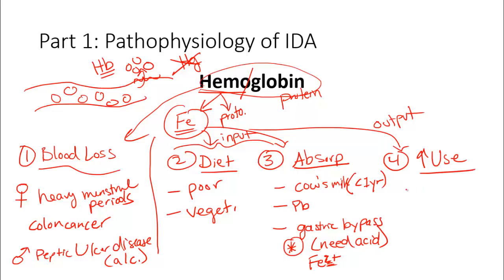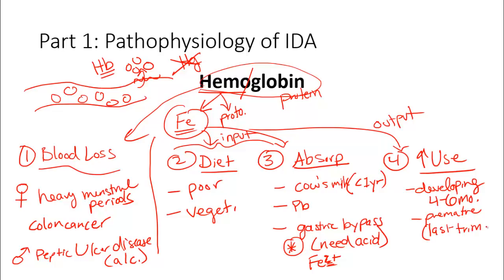Increased use is the fourth cause. Infants use up a lot of iron during development — most of their stored iron in the first four to six months. Premature infants are especially at risk because most iron is absorbed by the fetus in the last trimester. Also, pregnancy is a major cause — almost one in every two pregnant women has iron deficiency anemia, because you're now developing for two, not just one.